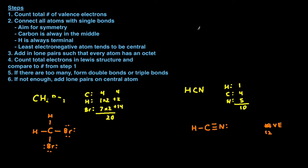Let's do one final example. For the last example, let's take a look at BrF₅. First step: count the total number of valence electrons. Each of these are halogens, so each has seven valence electrons. We have five fluorines, giving us thirty-five, plus the seven from the bromine, giving us a total of forty-two valence electrons.